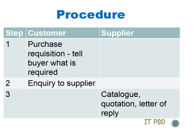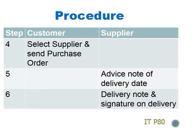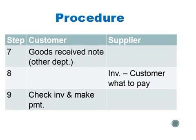Step 1: A purchase requisition is made to the purchasing department to tell the buyer what is required. Step 2: The customer then sends an enquiry to the supplier. Step 3: The supplier responds with a quotation. Step 4: The customer selects a supplier and sends out a purchase order. Step 5: The supplier will send an advice note of the delivery date. Step 6: The supplier will then deliver the goods, with a delivery note to sign on delivery. Step 7: Once the goods are received, the customer will make out a goods received note and send it to other departments. Step 8: The supplier will send an invoice to tell the customer what to pay. Step 9: The customer will then check the invoice and make payment.